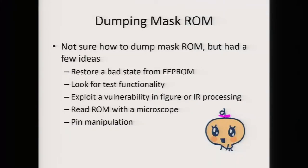At this point I really wanted to dump this maskrom and I had a few ideas. One was to restore a bad state from the EEPROM — hoping it had stack pointers and instruction pointers — but unfortunately it contained only serialized data and didn't work. Another idea was to look for test functionality, since some microcontrollers have test functions that can dump the code. Another was to exploit a vulnerability in the processing of figure data or infrared data, since these are basically untrusted data processed by the Tamagotchi. Another option was to read the ROM with a microscope — maskrom bits are visible since they're manufactured into the transistors. And another was pin manipulation — maybe listening to the right pin or area on the die to see what instructions were being executed.